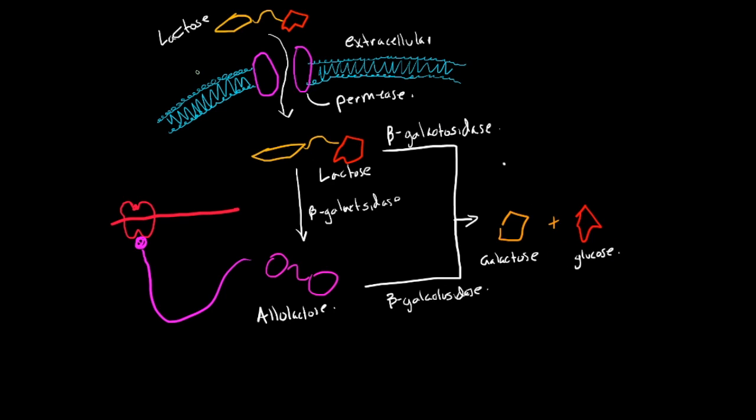So that is basically how lactose is transported into the cell and how it will eventually inactivate this repressor. This would be an inducible operon, a negative inducible operon. So the repressor is always bound and it is inactivated and thus removed. So transcription can occur on these genes here that will lead to this product of beta-galactosidase. So this is the product.